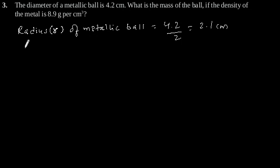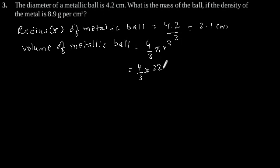Using the formula of volume of spherical metallic ball which is 4/3 πR³. Putting the value of R we will get 4/3 × 22/7 × (2.1)³. This is equal to 38.808 cubic centimeters.